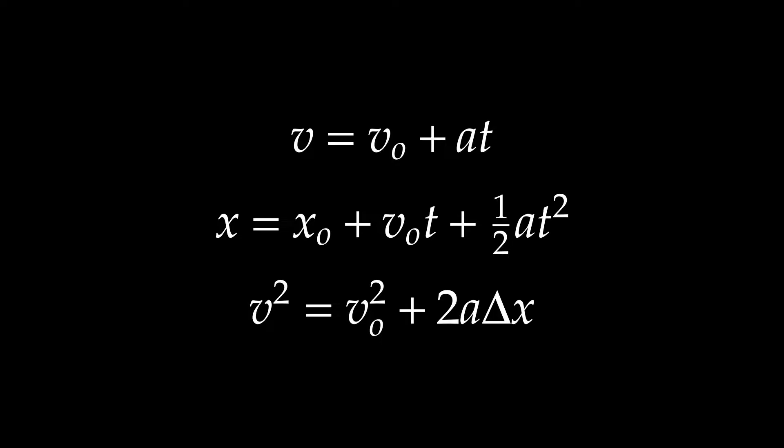The final velocity equals the initial velocity plus acceleration multiplied by time. The final position equals the initial position plus the initial velocity multiplied by time plus one-half of the acceleration multiplied by time squared. And the final velocity squared equals the initial velocity squared plus two a times delta x. These equations are in no particular order, but they are welded into my thinking about physics — they're automatic because they have great utility for solving problems.